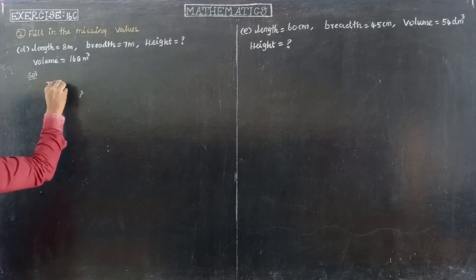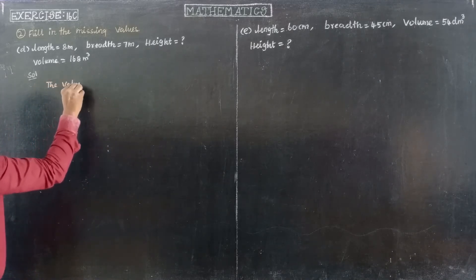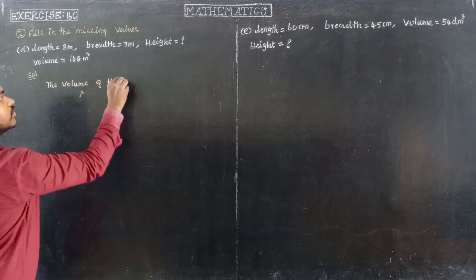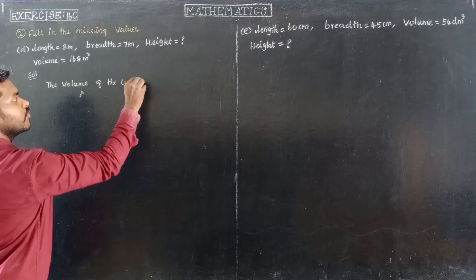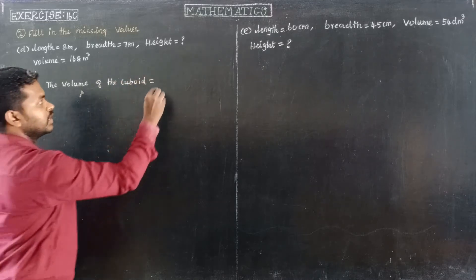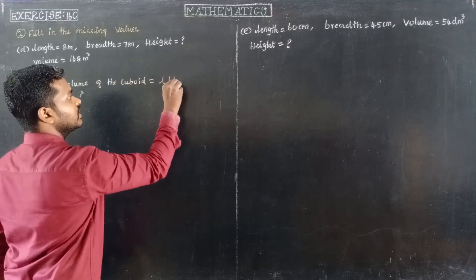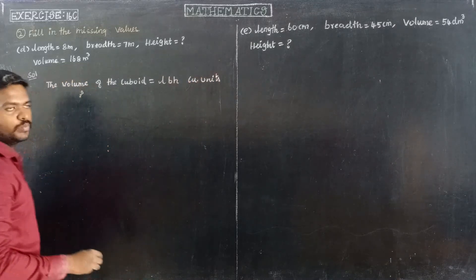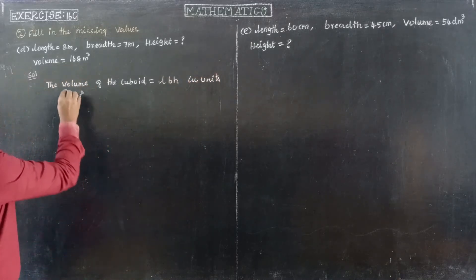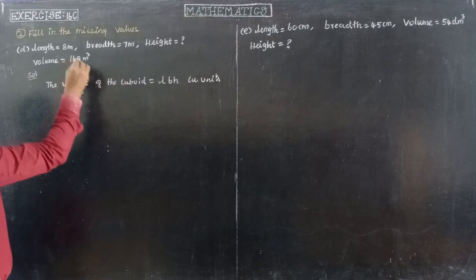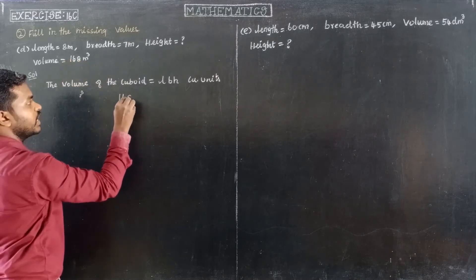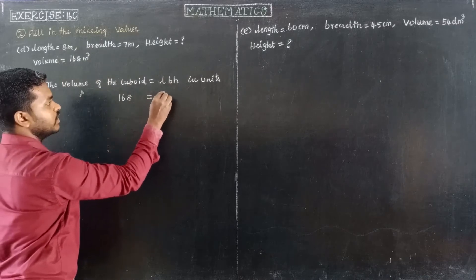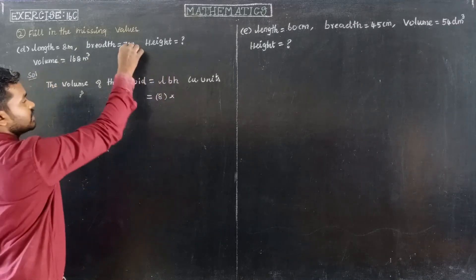The volume of the cuboid is equal to length into breadth into height, in cubic units. So the volume of the cuboid is 168. Therefore, 168 is equal to length 8 meter into breadth 7 meter into height.